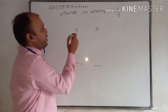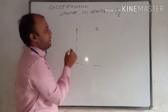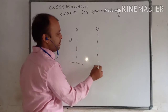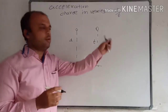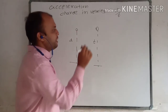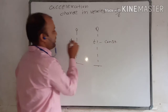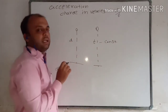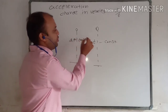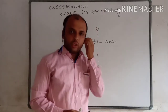Gravity attracts any object, as you know. When he released any object, he found the change in velocity with respect to distance, and also the change in velocity with respect to time. In both cases, he found that change in velocity with respect to distance is not constant. So he finally concluded that acceleration is change in velocity with respect to time.